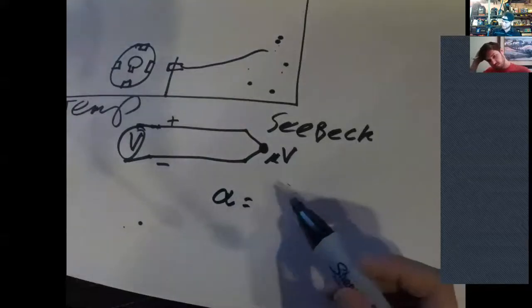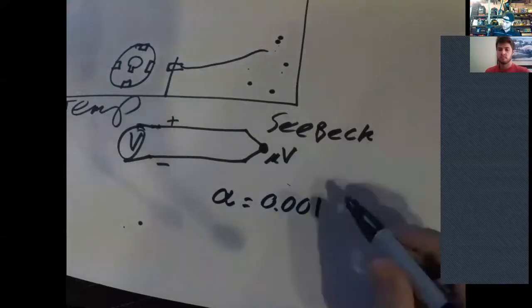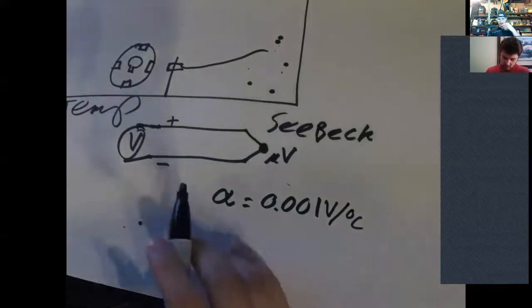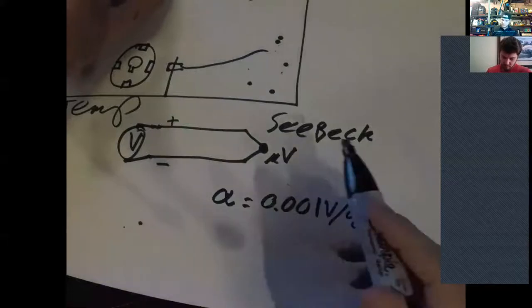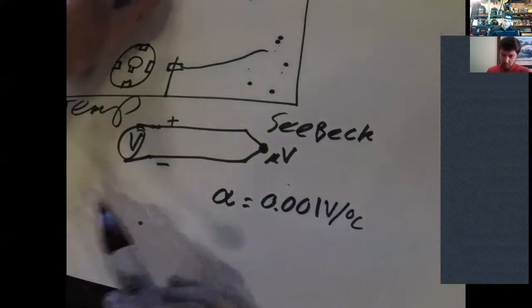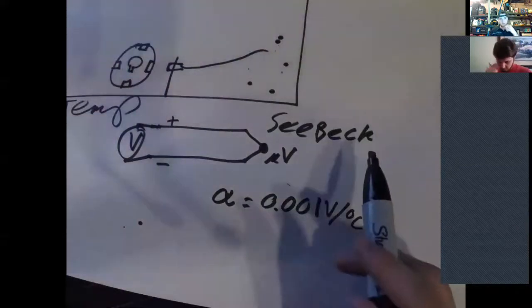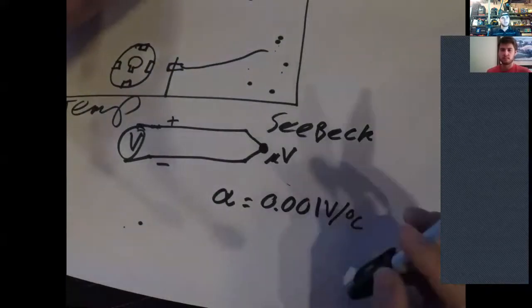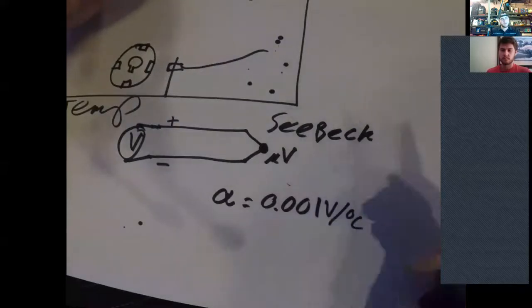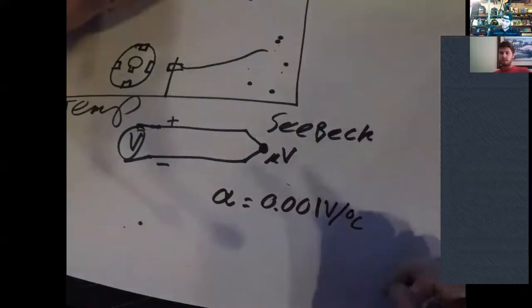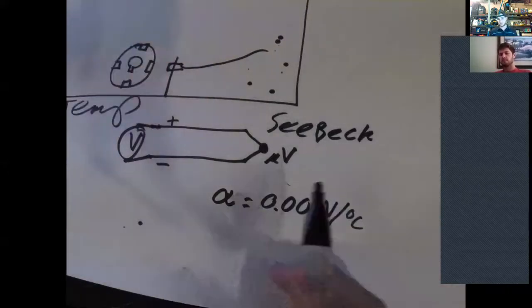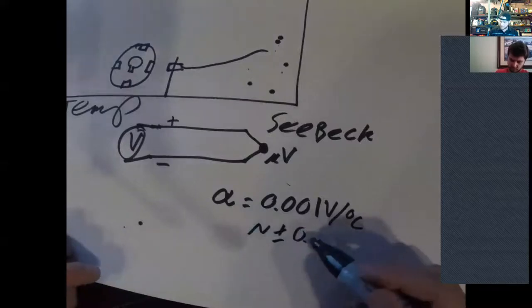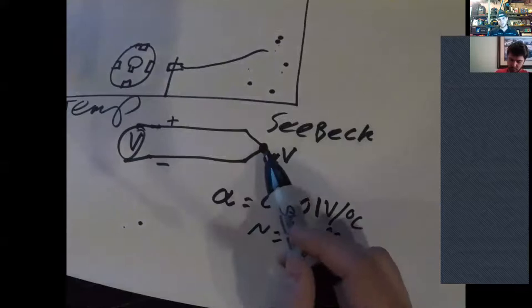So basically all you do is just connect a volt meter on either side of this. And then you stick this probe into usually into a liquid whose temperature you want to sense. And you just take a reading on that voltage and you'll have some alpha coefficient that's your Seebeck coefficient. And it basically correlates like, you know, 0.01 volts per degree Celsius change.